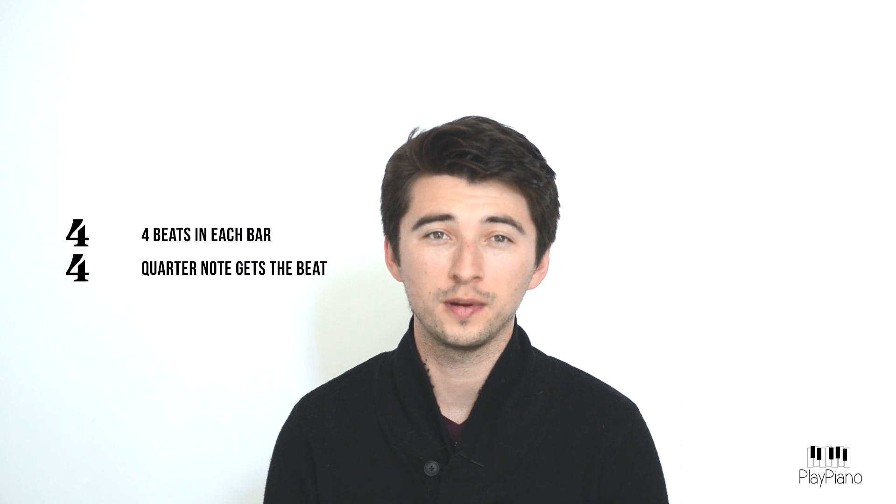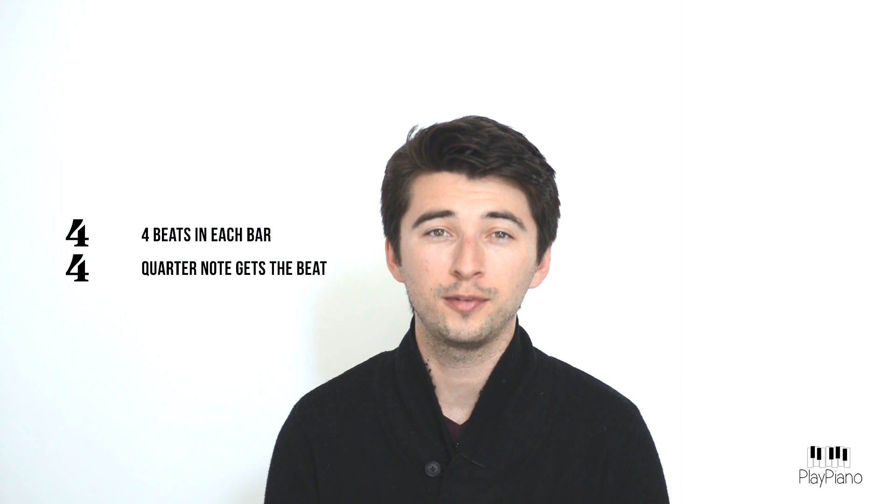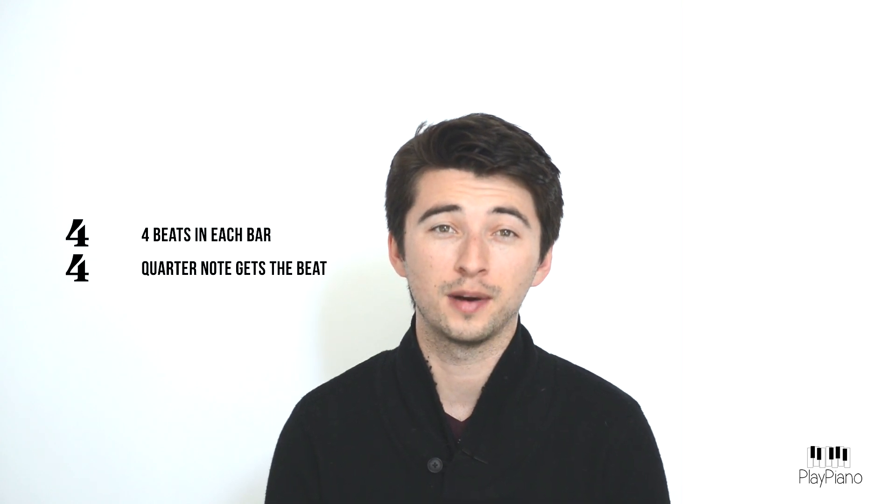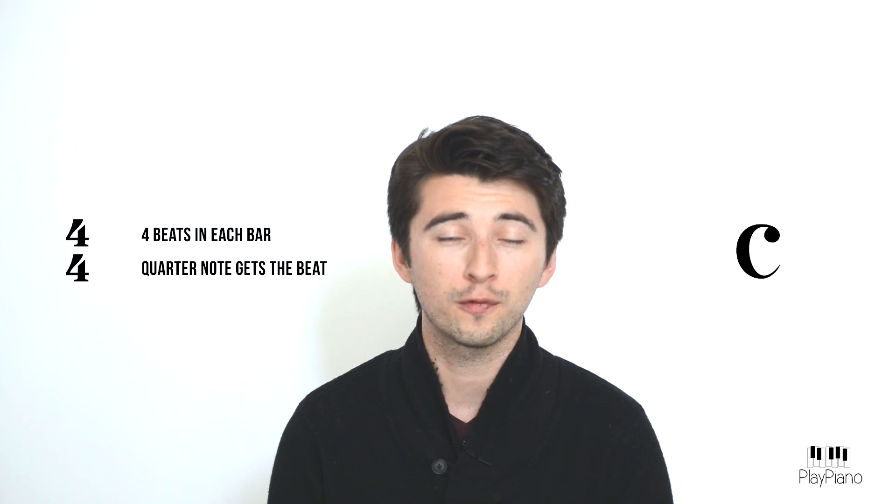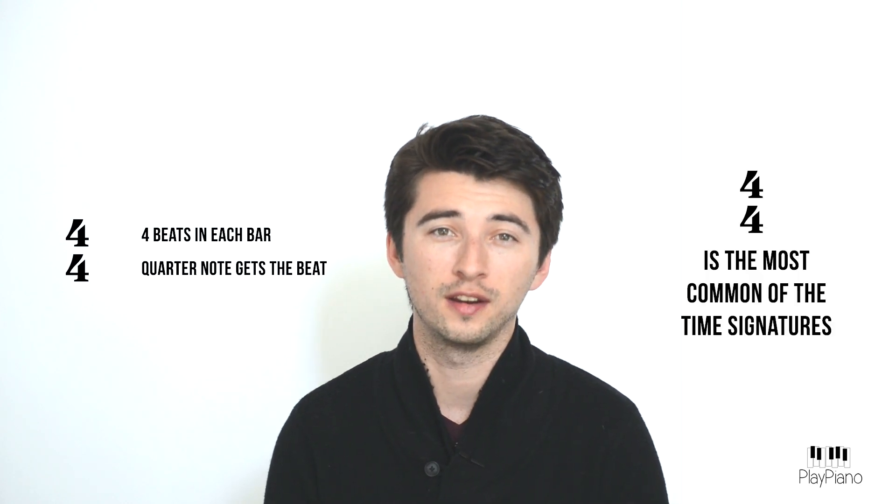Okay, now this time signature is 4-4, which means that there are 4 beats in each bar and the quarter note gets the beat. Now, this time signature is also represented by a C, which stands for common, as 4-4 is the most common of the time signatures.